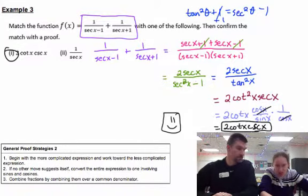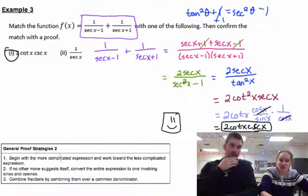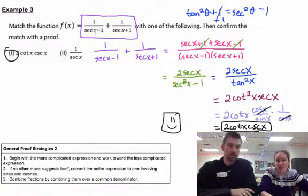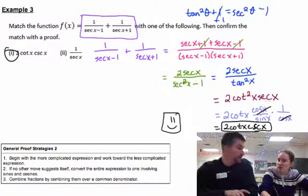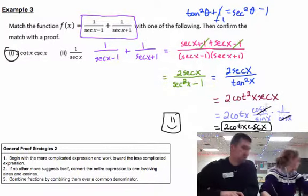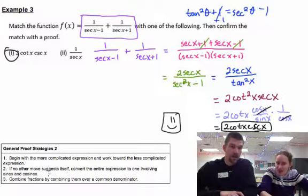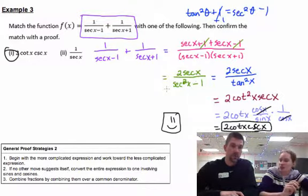And we've got some more proof strategies here in this area. Some of us with more wisdom are excellent at these. Begin with the more complicated expression, work towards the less complicated expression. So that means sometimes if you want to start on the right side, if it seems like you can tell something to do on the right side, do it. Number two, if no other move suggests itself, convert the entire expression to one involving sines and cosines. That's what we did at the very end. And last, combine fractions with a common denominator.